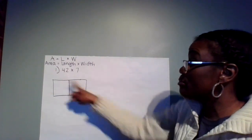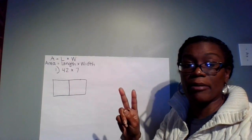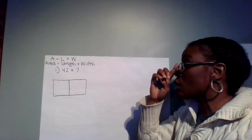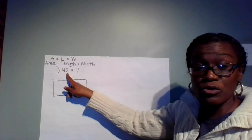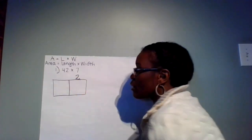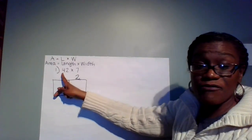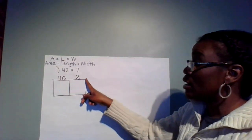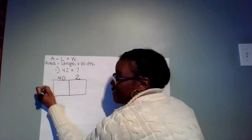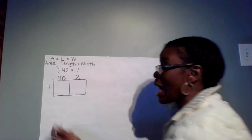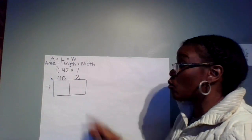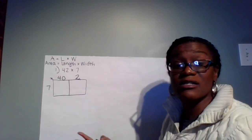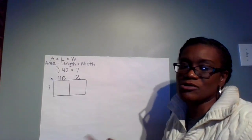I need two boxes because my first number, 42, is a two-digit number. With this strategy, our multiplication is always based upon place value. The value of the two in 42 is simply 2, and the value in the tens column is 4, which equals 40. This is my length, and for my width I'm going to have 7. I put my multiplication symbol on the side to remind me. If your scholar knows their multiplication facts, this is the easiest way to multiply, especially with larger numbers.